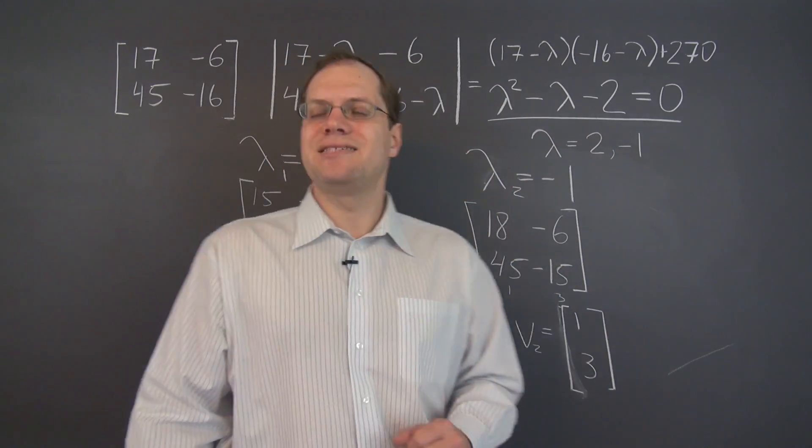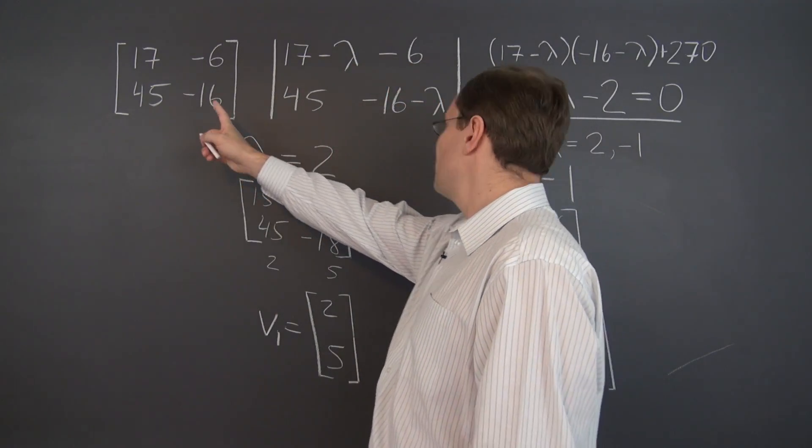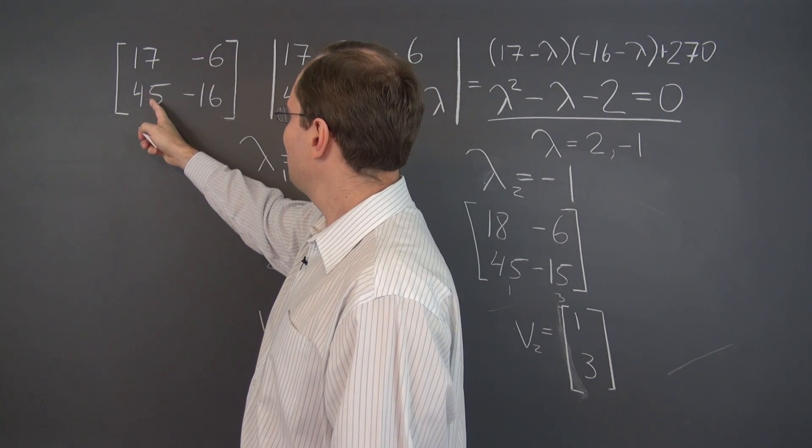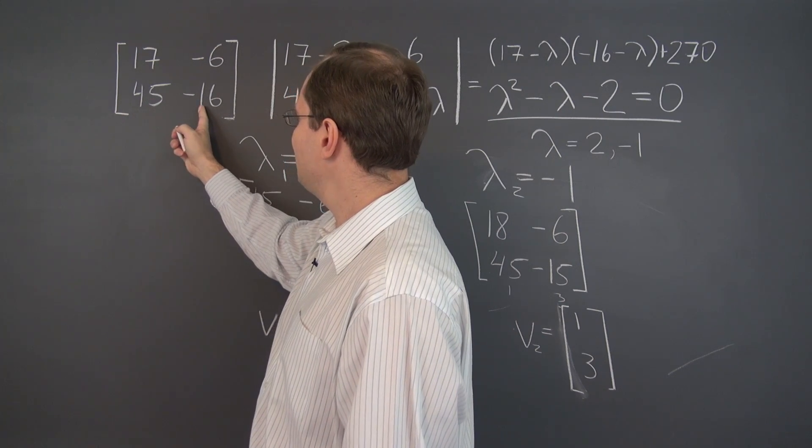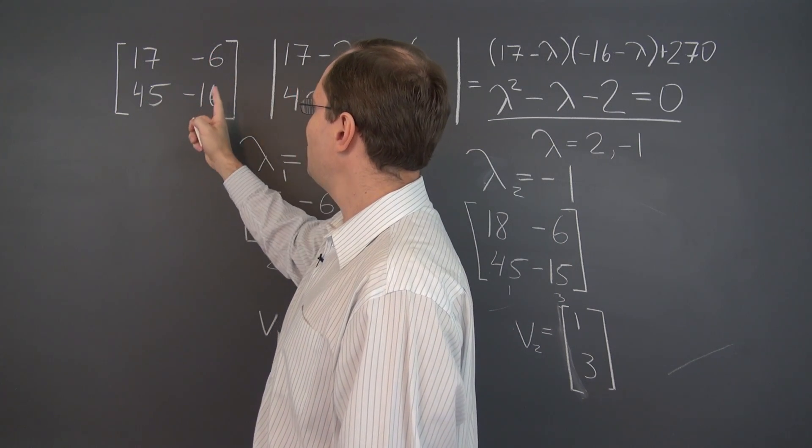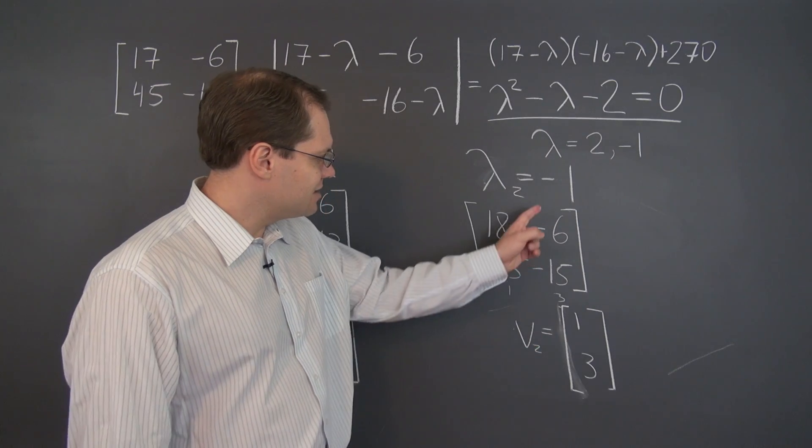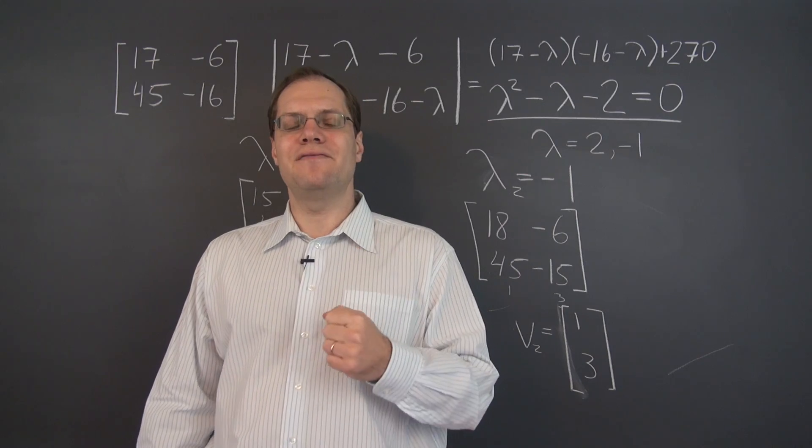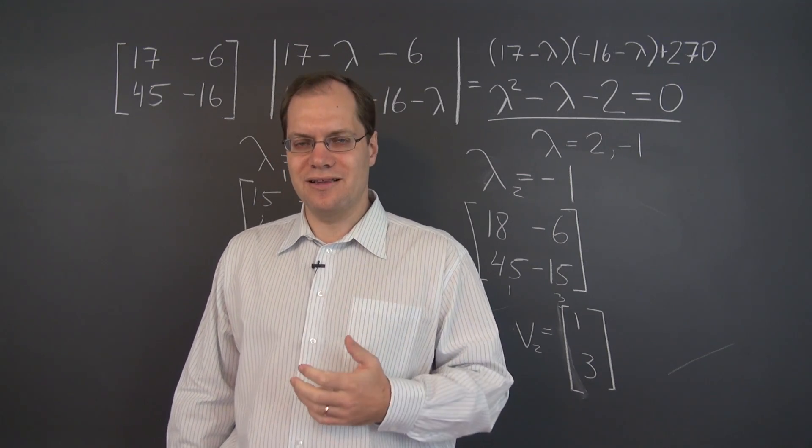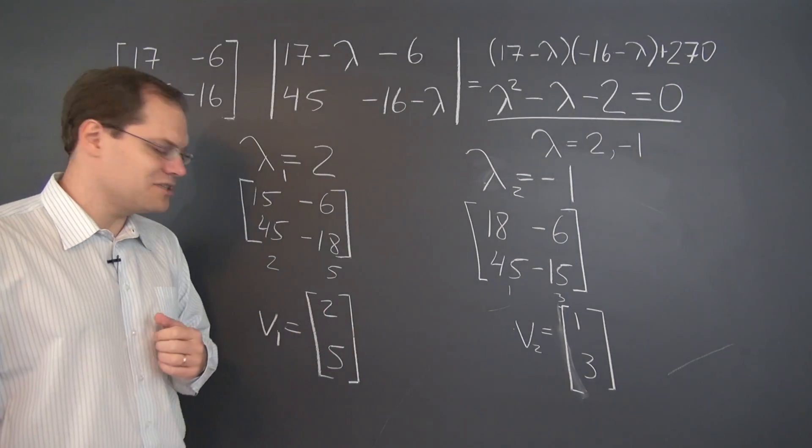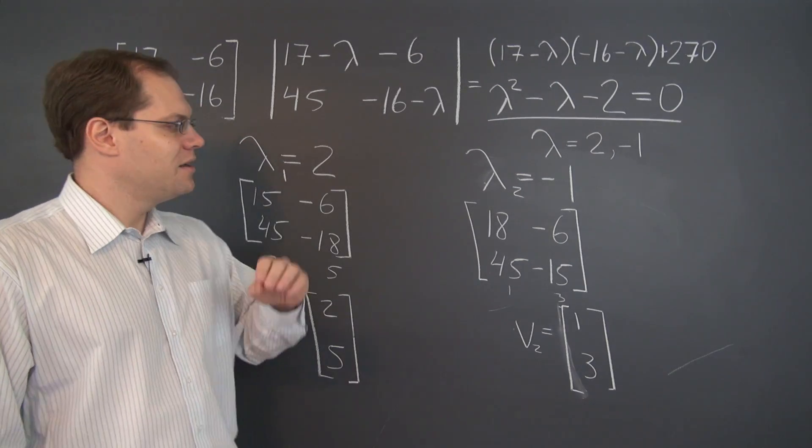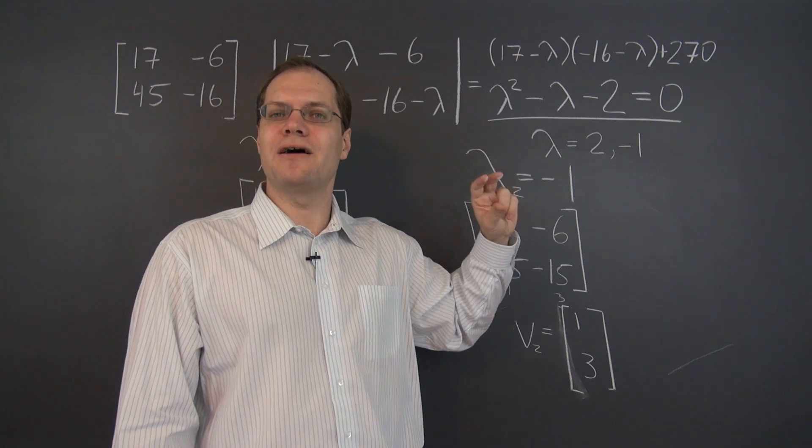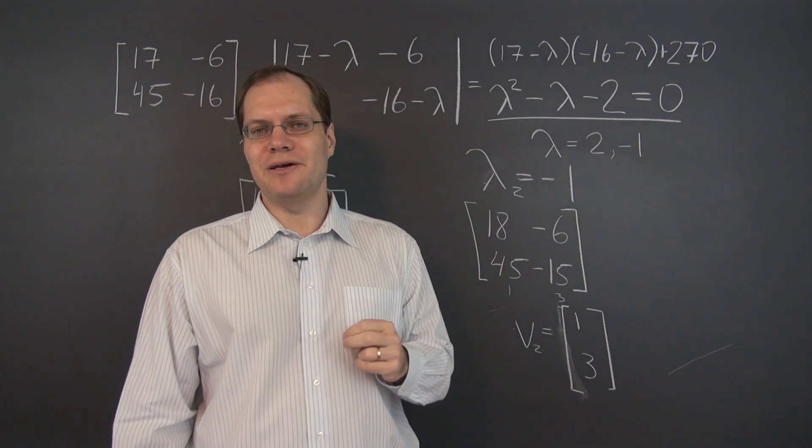Let's test to make sure that's correct. Multiplying this matrix by [1, 3] gives us negative 1 and 45 minus 48, negative 3. So negative 1, negative 3, exactly minus 1 times the input. So we have found both eigenvalues and eigenvectors correctly. So this was a good demonstration of the eigenvalue algorithm. And we discovered a little bit of eigenvalue magic, the sum being the trace, the product being the determinant along the way.